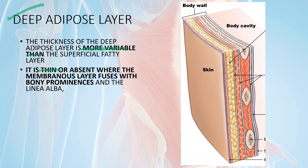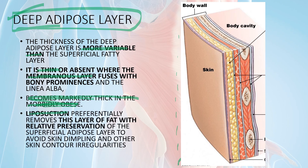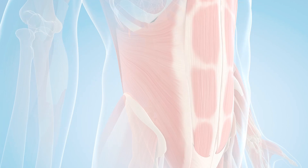The deep adipose layer is absent where the membranous layer fuses at bony prominences such as the linea alba, where it adheres. However, it is very prominent in obese patients, which is why clinically this layer is important. In liposuction, it is this deep layer that is removed. The upper two layers are not removed, because removing them could cause skin dimpling due to uneven fat removal. So the answer to which layer is removed in liposuction is the deep adipose layer — the third layer.